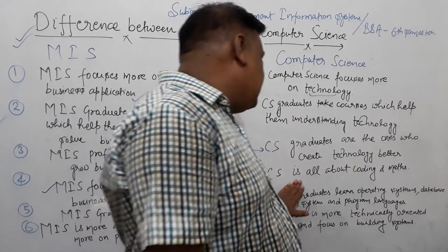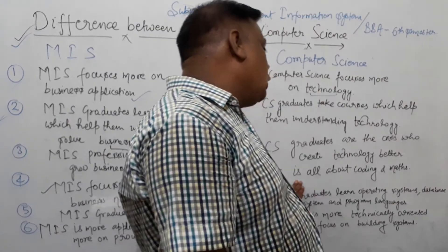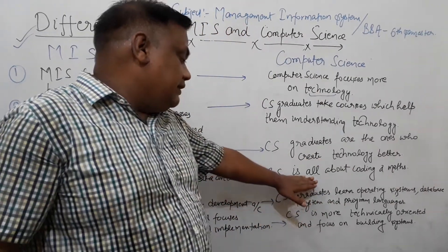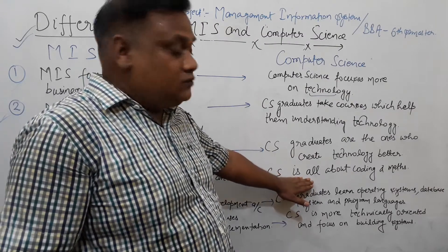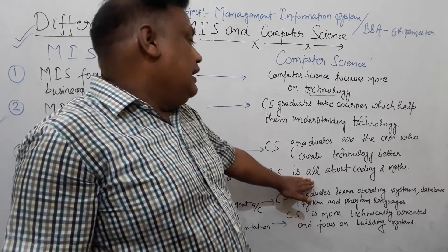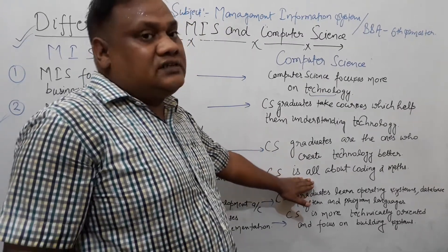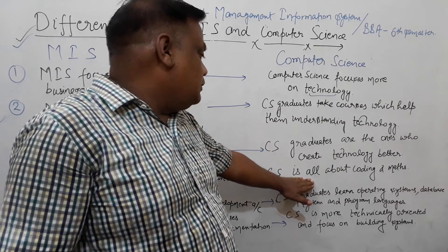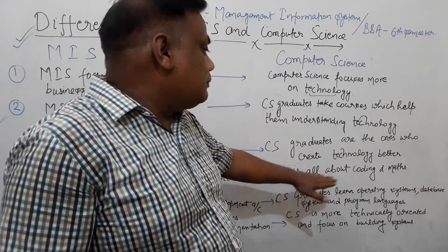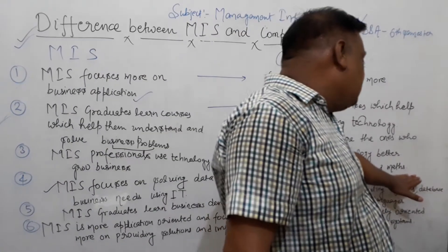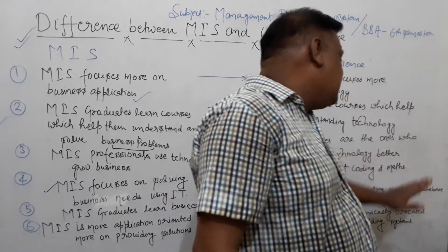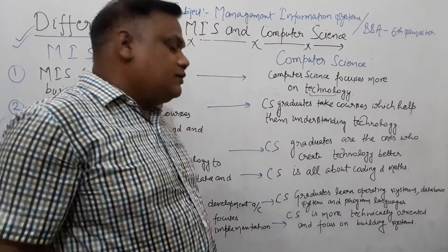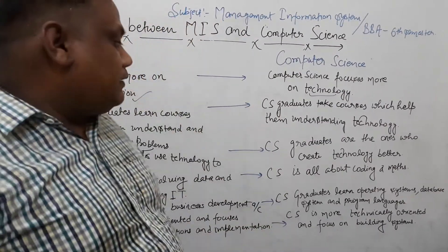CS is all about coding and maths. We talk about software development and coding languages such as C, C++, Java, Visual Basic, ASP.NET, and C#. Maths and coding are central to computer science.